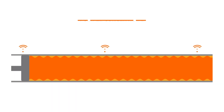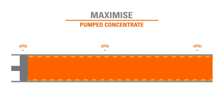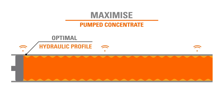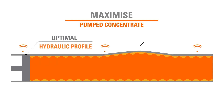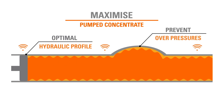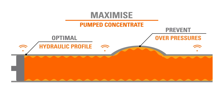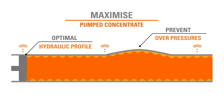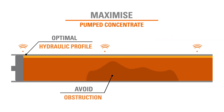Ore duct. We maximize pumped concentrate ore flow while keeping the ore duct water level within acceptable parameters, preventing excessive pressure that might cause early wear and tear, and avoiding solid sedimentation that obstructs pulp movement, which might cause full duct obstruction.